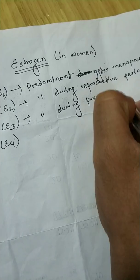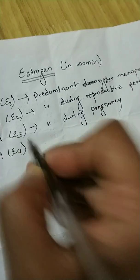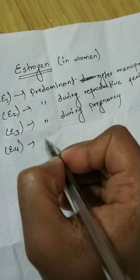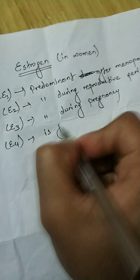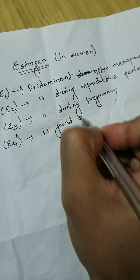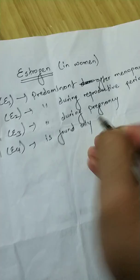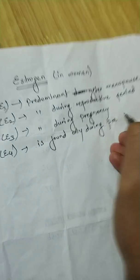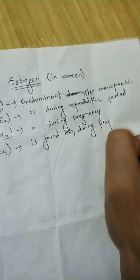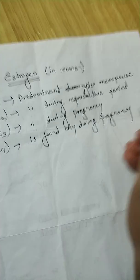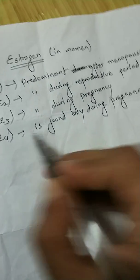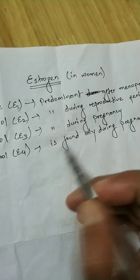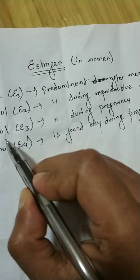When a woman is pregnant, E3 is predominant. And E4, estetrol, is found only during pregnancy — meaning it is produced only during pregnancy.